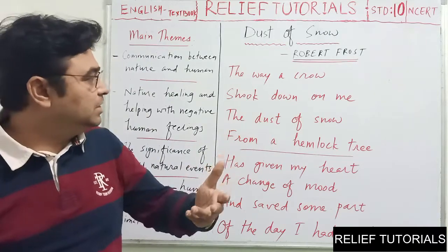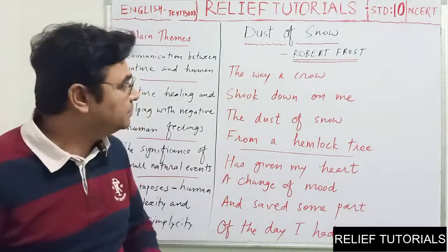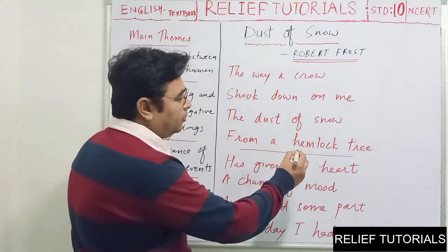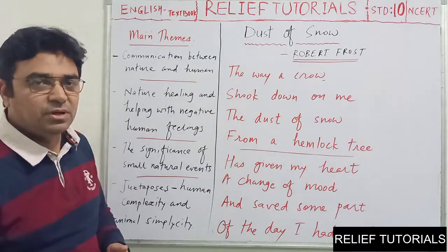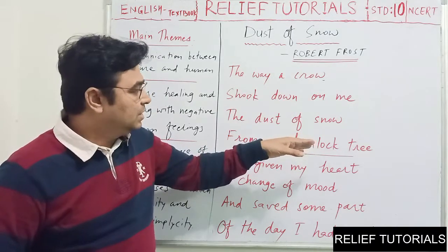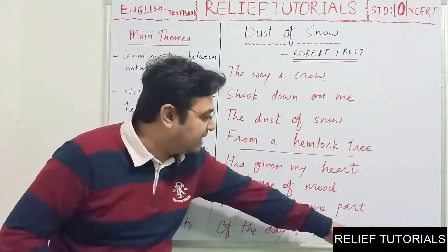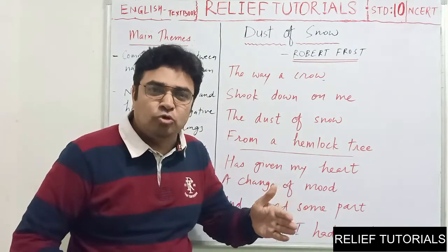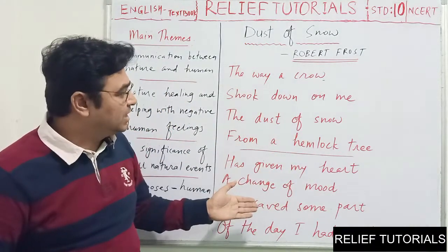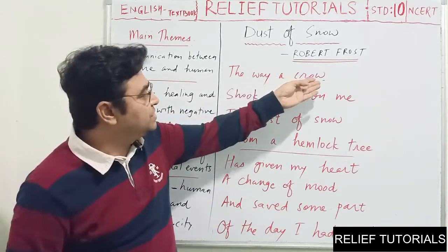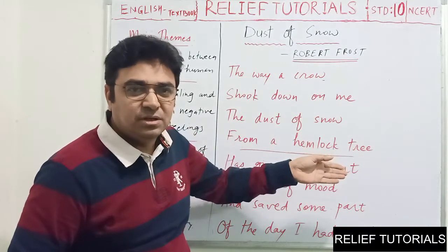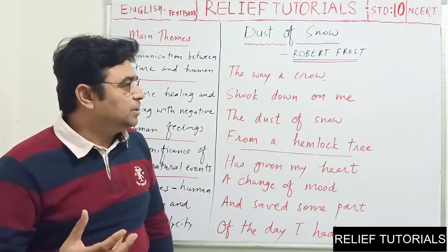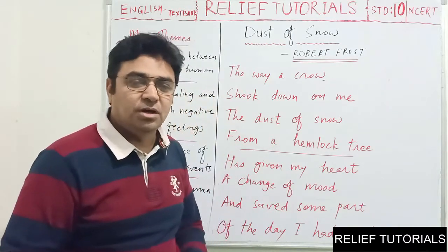Now let's look at the poetic devices. 'The way a crow shook down on me the dust of snow from a hemlock tree' — here the line does not end; it is carried on in the next line, and again carried on in the next line. The whole poetry is actually a single sentence, fragmented into various verses and divided into two stanzas, but actually it is a single sentence. So the sentence is run on in the next line — one of the very important figures of speech: run-on line or enjambment would be applicable here.